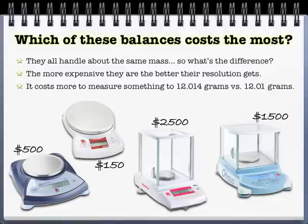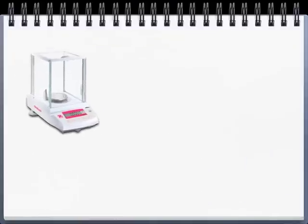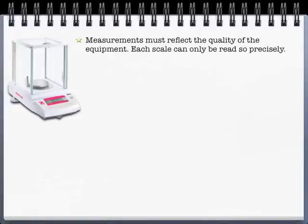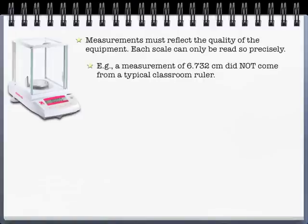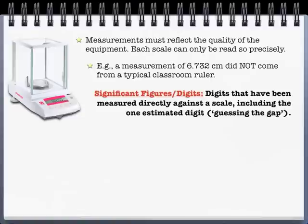The numbers you write down are important. Because if they have more digits past the decimal, they probably were taken from instruments that cost more. The numbers we write down have to reflect the equipment they came from. So if you write down 6.732 centimeters, you did not read that off a classic classroom ruler. Just as if you wrote down 6.7 centimeters, you didn't record that off a classic classroom ruler. This gets into the concept of what digits are significant.